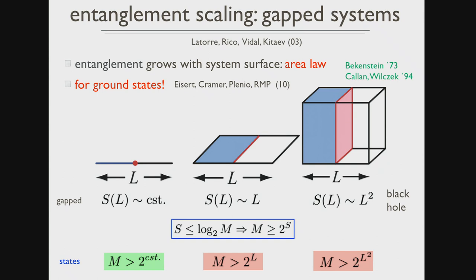This goes back to black hole physics — the famous Bekenstein entropy of the black hole in 1973. But this holds for ground states and certainly for low-lying excited states and also other states, but not in general. So it's a highly specific property. It turns out that for states that we are interested in, it's often true. So let's assume that for a moment and then explore the consequences.